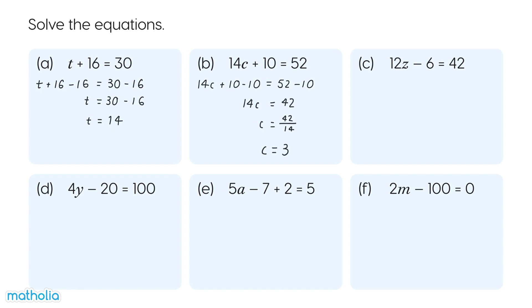C. 12Z minus 6 equals 42. Add 6 to both sides. 12Z equals 48. Divide both sides by 12. Z equals 4. We have solved the equation.